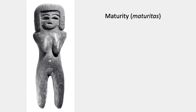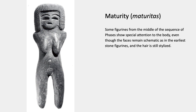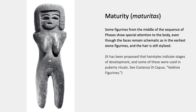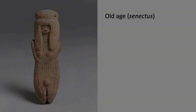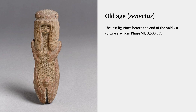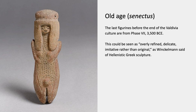It is possible to see the outlines of these stages of art if you look at the later phases. Some figurines from the middle of the sequence show a special attention to the body, even though the faces stay schematic and the hair is still stylized — so this would be something like maturity. It's been proposed that these hairstyles, which always remain schematic, were symbolic of different stages of development, and that some figurines were used in puberty rituals. And then old age — the last of the figurines from phases seven and eight, around 3,500 BCE — could be seen in the same way that Winckelmann saw Greek Hellenistic sculpture: overly refined, too many details, delicate, not strongly molded, and imitative of earlier work rather than original.